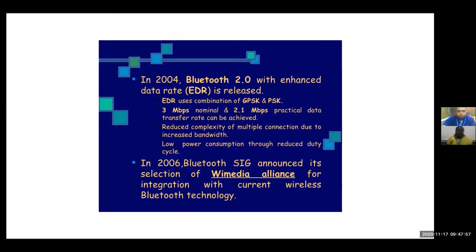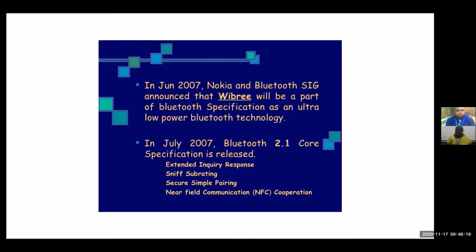Bluetooth version 2.0 reduced complexity of multiple connections due to increased bandwidth and offered low power consumption through reduced duty cycles. In 2006, Bluetooth SIG announced its selection of the Wi-Media Alliance for integration with wireless Bluetooth technology. In 2007, Nokia and Bluetooth SIG announced that Wibree would be part of the Bluetooth specification as an ultra-low-power Bluetooth technology. Also in July 2007, Bluetooth version 2.1 was released, featuring extended inquiry response, sniff subrating, and Secure Simple Pairing, enabling single-touch Bluetooth pairing.